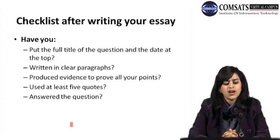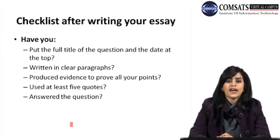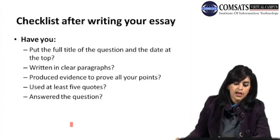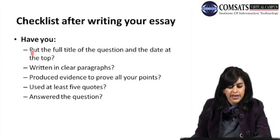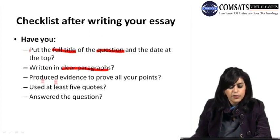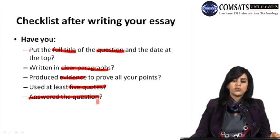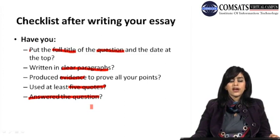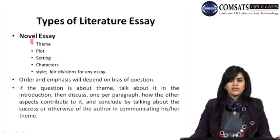There is a checklist you can paste on your study table before writing a literature essay. First, put the full title of the question and date at the top. Make sure you have written clear paragraphs, produced evidence to prove all your points, used at least five quotes — the minimum number of quotes in your literature essay is five — and answered the question that was in your introduction and thesis statement, clearly in your conclusion.